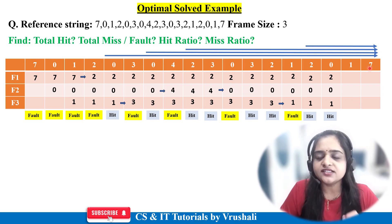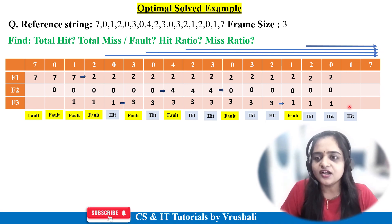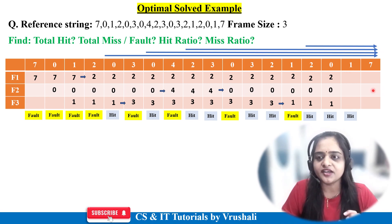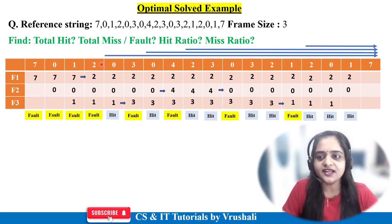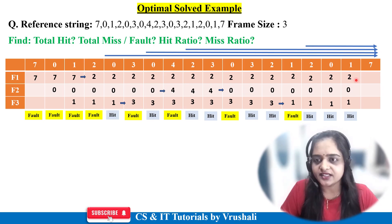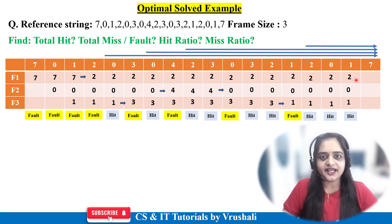Now the last one: the CPU demands page 7. Page 7 is currently not present in main memory. Check the future references starting from this point: frames hold 2, 0, 1. Looking ahead in the string: first 0, then 1, then 2 — meaning page 2 will be used last. So the operating system replaces page 2 with page 7, and the remaining data stays as it is.